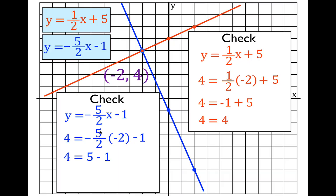That means I get four equals five. You can do this on your calculator: minus five times minus two divided by two gives you five — or you can see the twos cancel, but remember a minus times a minus is a positive — minus one. And once again you get four equals four. Because that checks for both equations, this is the correct solution point — the point where those two lines intersect.